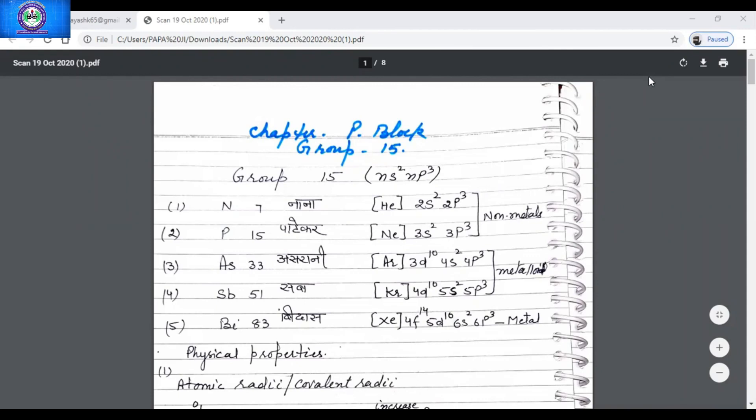Its electronic configuration is helium 2s2 2p3, because the general electronic configuration of group 15 is ns2 np3. So there are five valence electrons in nitrogen: 2 in the 2s orbital and 3 in the 2p orbital.